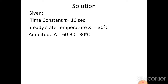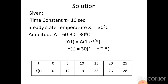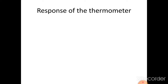The time constant is given, the steady state temperature is given, and the magnitude A is given. We have to find the response of the thermometer for the first order system. We know the equation: Y(t) = A × (1 - e^(-t/τ)), where tau is 10 seconds and A is 30 degrees centigrade. Y(t) is calculated for various values of t and the graph is plotted for the response of the thermometer.